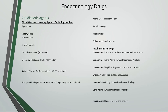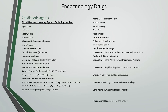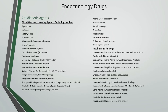Moving on to endocrinology drugs, under anti-diabetic agents, we have blood glucose lowering agents excluding insulins, including biguanides, sulfonylureas that are first and second generation, glitazones, DPP-4 inhibitors, SGLT-2 inhibitors, GLP-1 receptor agonists or incretin mimetics, alpha-glucosidase inhibitors, amylin analogs, meglitinides, and other anti-diabetic agents. Under insulins and analogs, we have concentrated insulins with short and intermediate actions, concentrated long-acting human insulins and analogs, concentrated rapid-acting human insulins and analogs, short-acting, intermediate-acting, long-acting, and rapid-acting human insulins and analogs.